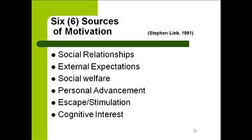There are external expectations to comply with the instructions from someone else and to fulfill the expectations and recommendations of someone with formal authority. An example of this motivator is a new employee who wants to do well — they might view you as a mentor, or they may have had someone else as a mentor — and they want to show how well they can do in this particular job.